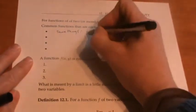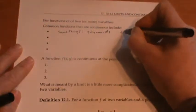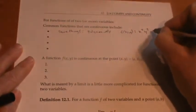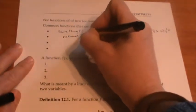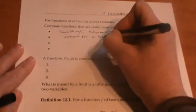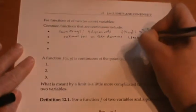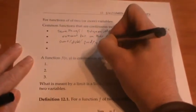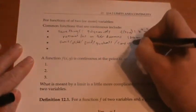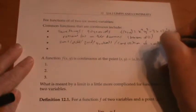For functions of two variables, a lot of the ideas and definitions are very similar. Common functions that are continuous include polynomials — which can now have several variables — rational functions, which are quotients of polynomials on their domains where the denominator is not zero, and sums, differences, products, quotients, and compositions of continuous functions, again being careful that the denominator is not zero.